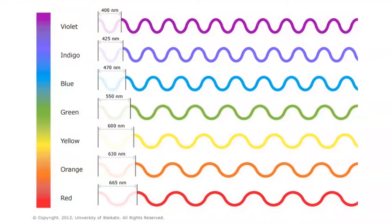Well, light has different wavelengths depending on the colors. Just like there are waves in the ocean, light has waves as well, just on very small scales. Red is much longer than violet up at the top, and all these colors combine to make one color of light — white light. That's the light we typically see coming from the sun or a flashlight.